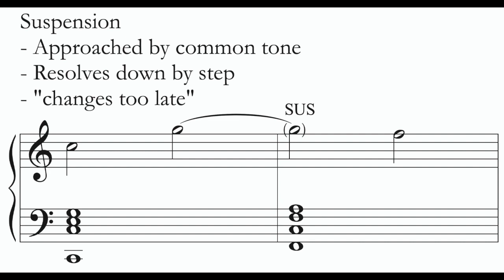Our last set of non-chord tones involve common tones — these involve non-chord tones that do not change; instead the chord changes while the note stays the same. The first of these is the suspension. The suspension is approached by common tone and it resolves down by step. Here we have a G on the second half of the first measure — G is a chord tone in the C major triad. But on the beginning of measure two, when the chord changes to F major, G becomes a non-chord tone approached by common tone. It resolves down by step, and that is what characterizes it as a suspension.